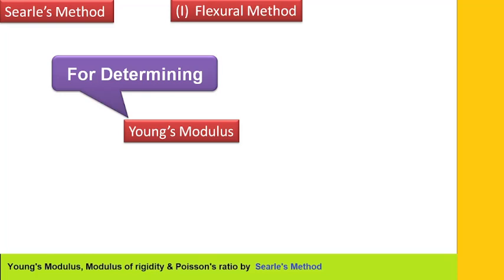Searle's device method for determining Young's modulus, modulus of rigidity, and Poisson's ratio. It is divided in two parts, two methods: the flexural method as well as the torsional oscillations method.